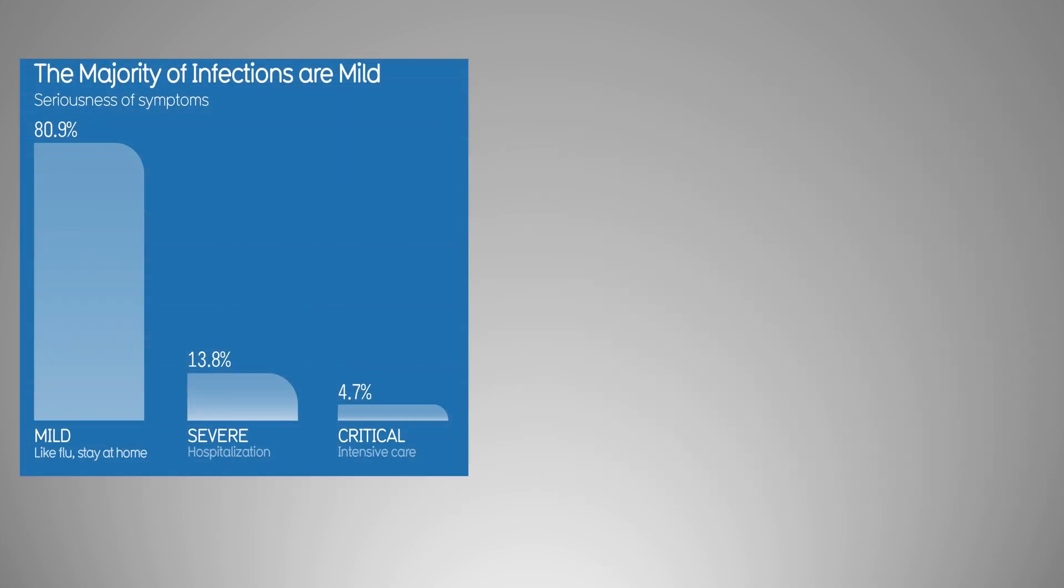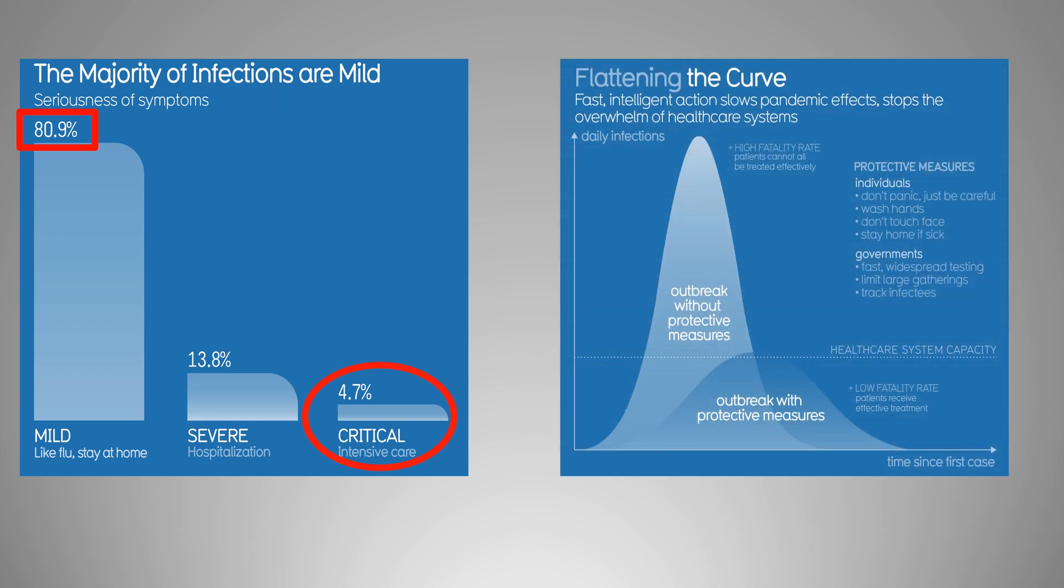Also, majority of the infections are mild and only 4.7% are critical. The epidemiologists say that the curve can be flattened only by protective measures.